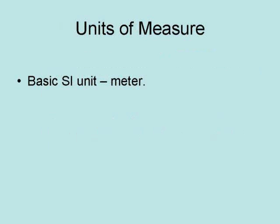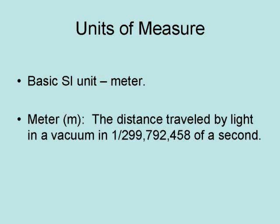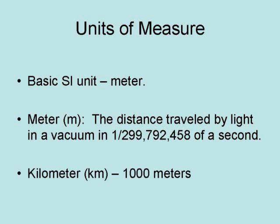The basic SI unit for measuring space is the meter. A meter is the distance traveled by light in a vacuum in 1/299,792,458 of a second. A kilometer is 1,000 meters.